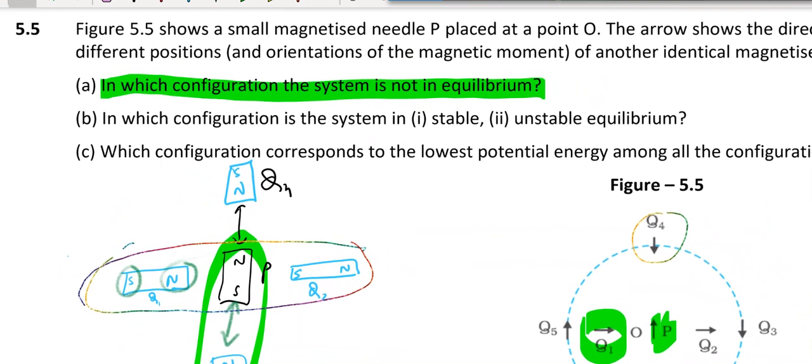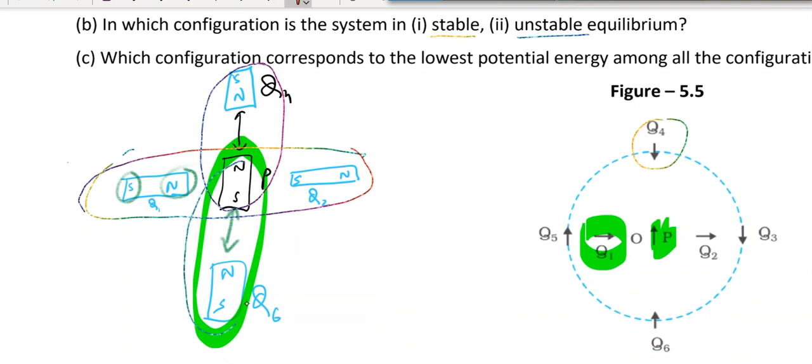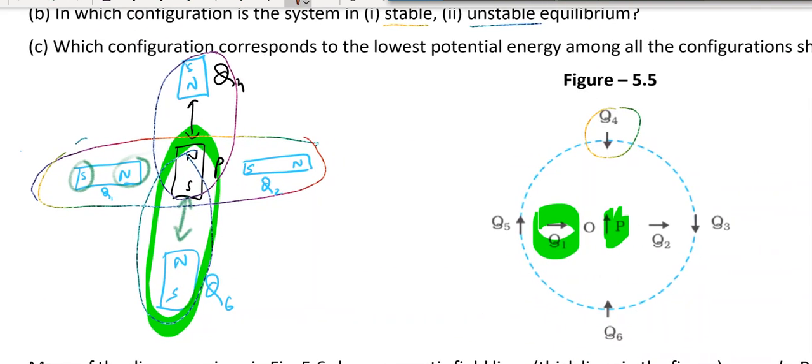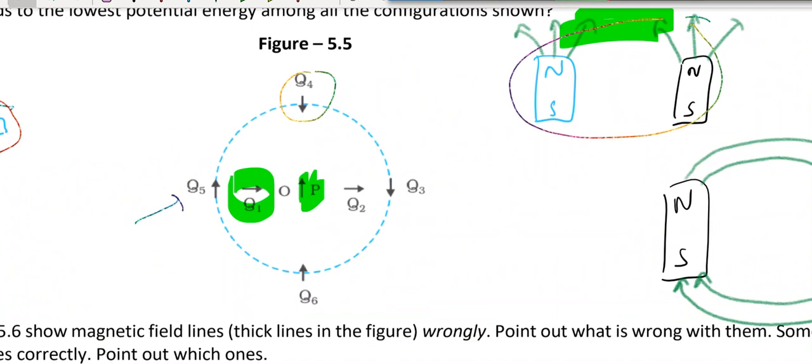Second question: which configuration where we have stable and unstable equilibrium? So pq4 is unstable, pq6 is stable. And even this is unstable equilibrium. Which one is it? p with q5. Whereas p with q3 is stable one.